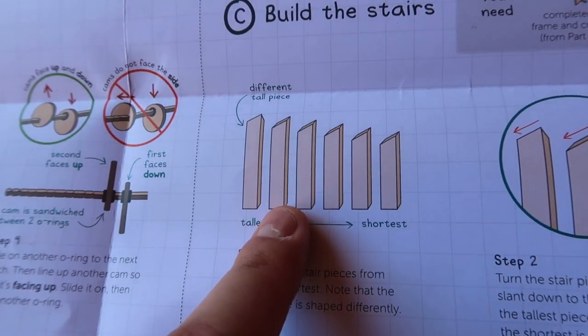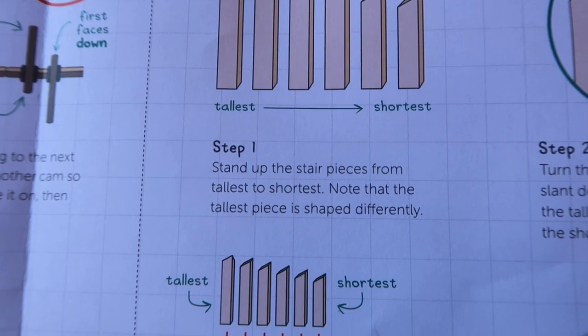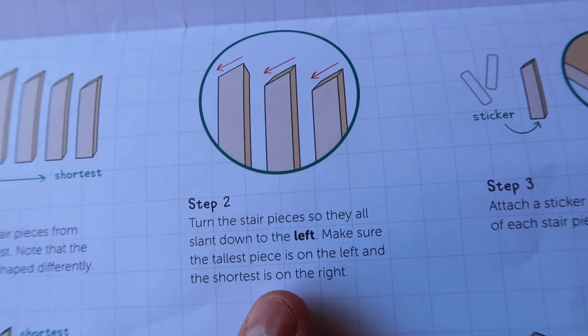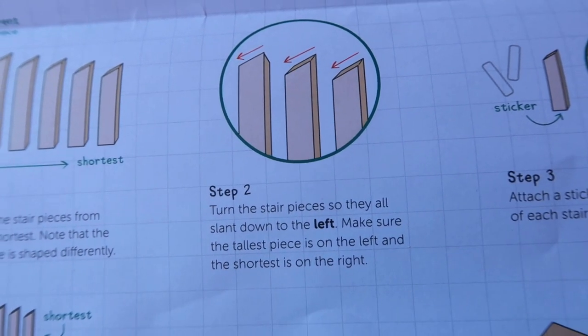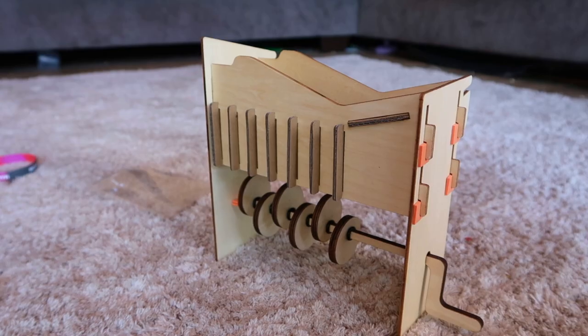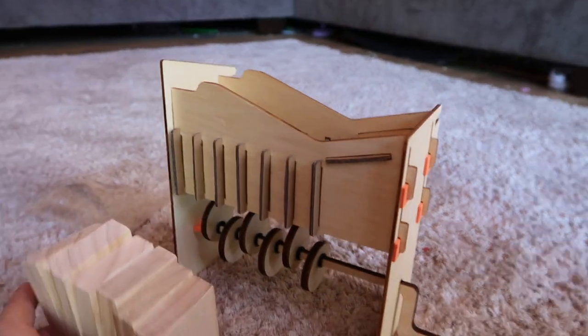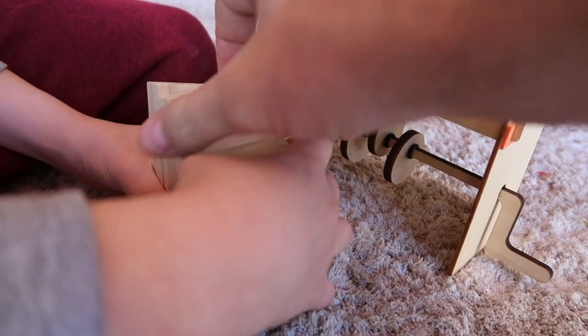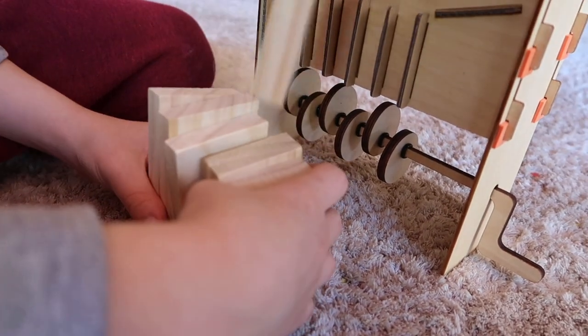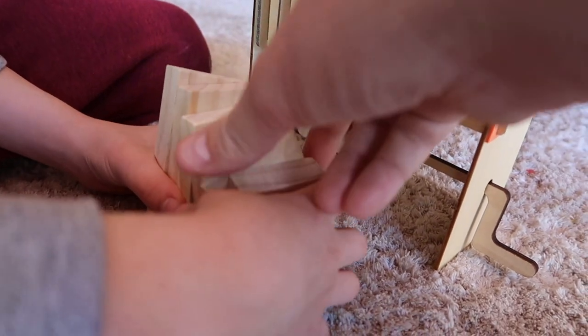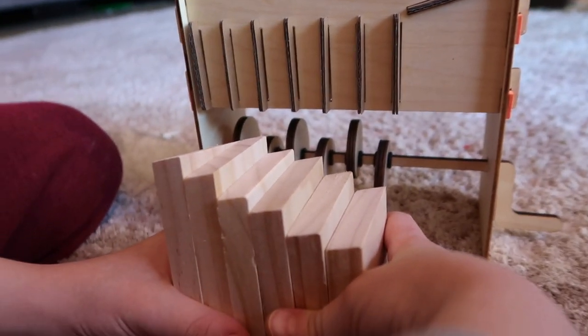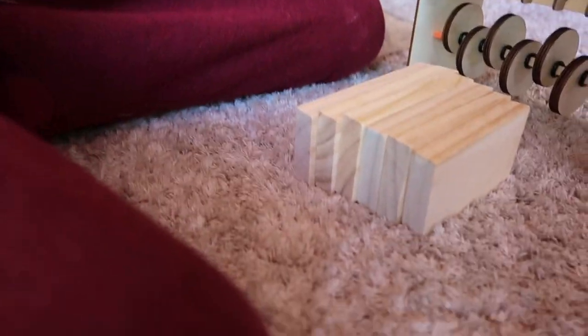Step one, stand up the stair pieces from the tallest to shortest. Note that the tallest piece is shaped differently. Turn the stair pieces so they are all slant down to the left. Make sure the tallest piece is on the left and the shortest is on the right. Attach a sticker to the bottom of each stair piece. We're gonna put the tallest on this side. But wait, don't place it in yet. So they're gonna stay like this. Do you see what I'm doing? So they're still tallest to shortest. But they're all slanting to the left. So they kind of make that kind of interesting pattern there. Let's put a sticker on the bottom of each one.